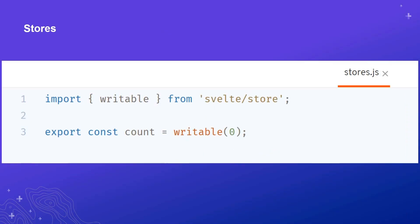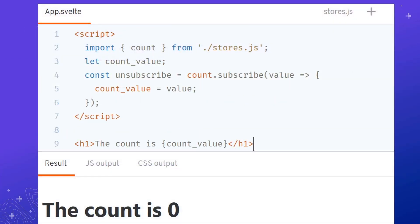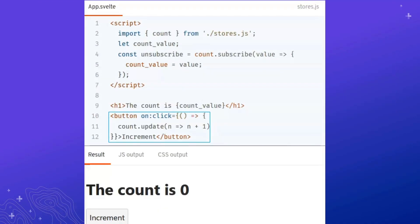Events are great for passing information up to the parent, but once you build a large enough app with many components, passing events up or props down can require a lot of code. Stores solve this problem. A store is simply an object with a subscribe method that allows interested parties to be notified whenever the store value changes, no matter where that component is in the application. To create a store, include the writable store from Svelte, call the writable function, and pass the initial value as the parameter. To use the store, import it and call the subscribe function — every time the value changes, update your local display variable. To update the store, add a button with a click handler that calls the update function on the store variable, passing in a function that updates the value.